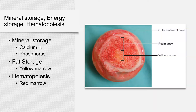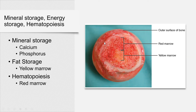Mineral storage: you store mostly calcium and phosphorus. You can store fat in the yellow bone marrow, and in the red bone marrow you produce blood cells. The process of blood cell production is called hematopoiesis. Bone is actually a very, very vascular organ — it shows you the outer surface, red bone marrow, and yellow bone marrow inside the medullary cavity. You store fat in the yellow marrow and hematopoiesis happens in the red marrow.